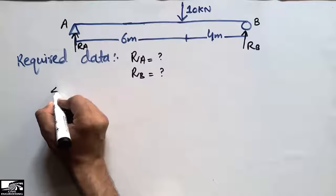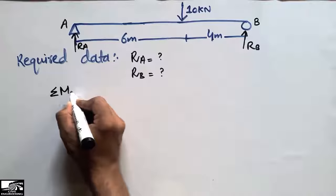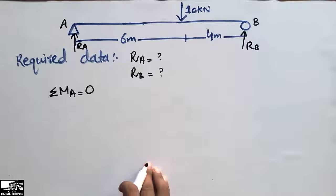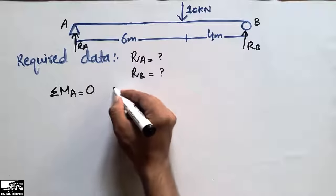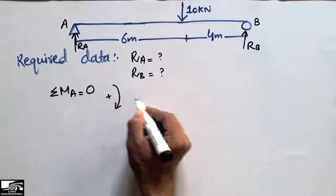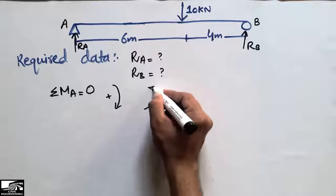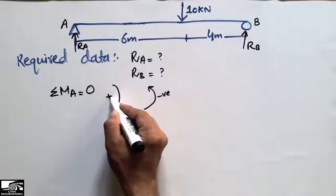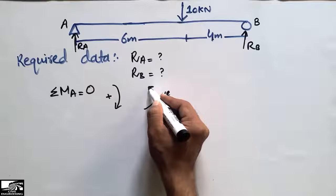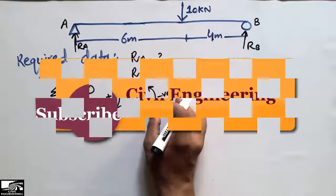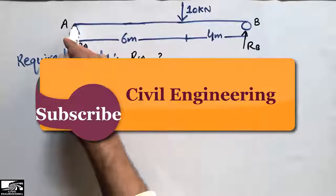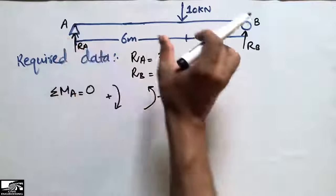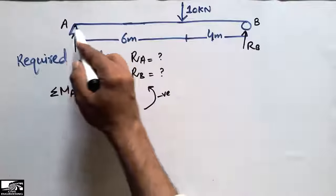To start the calculation, since both supports do not resist any moment, we can say the summation of moments at point A is equal to zero. We take clockwise moments as positive and anti-clockwise moments as negative. The summation of moments equals zero, and we will now calculate each moment acting at point A one by one.